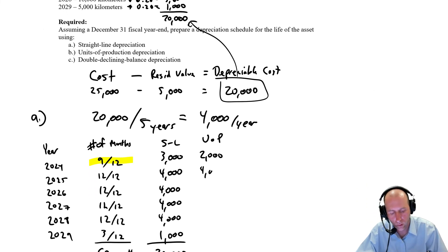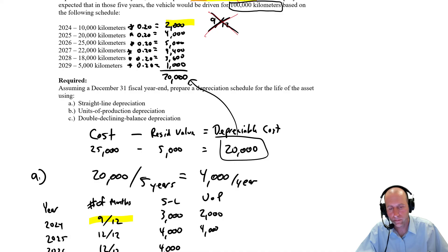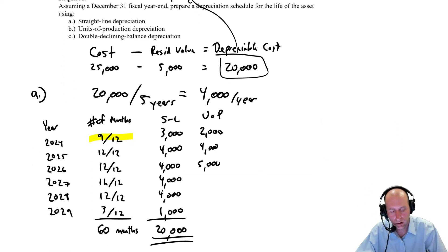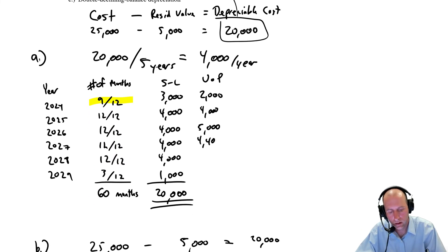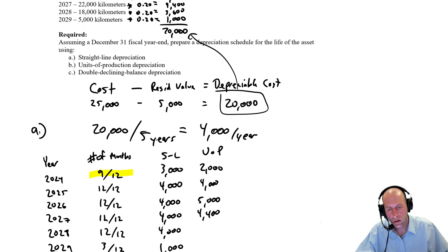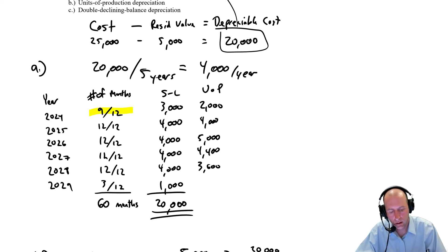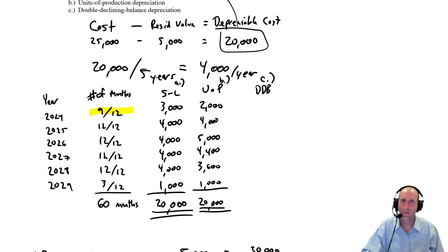$2,000, $4,000, $5,000, $4,400, $3,600, and $1,000. And we get to $20,000 in depreciation. Okay, so there we've kind of done, I guess I called this all A. This is A. This one is B. And we're going to do C, double declining balance, in our next video. Stay tuned.